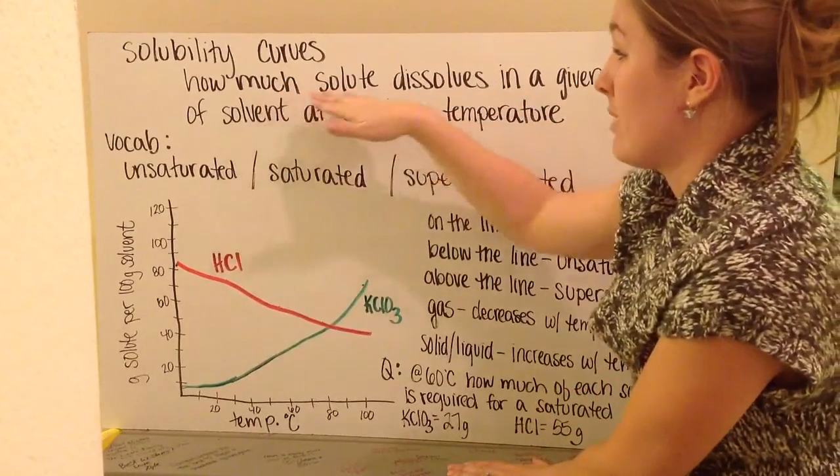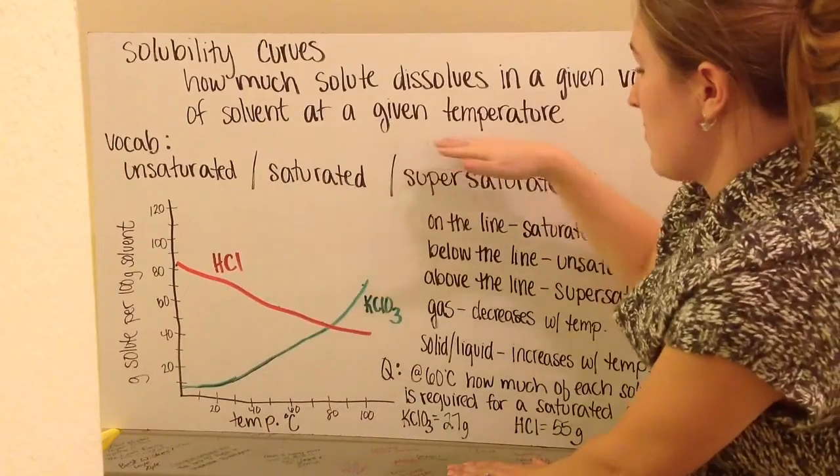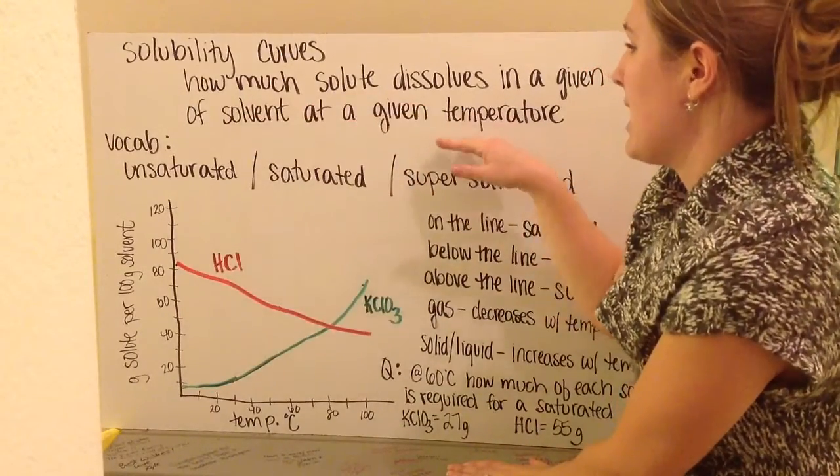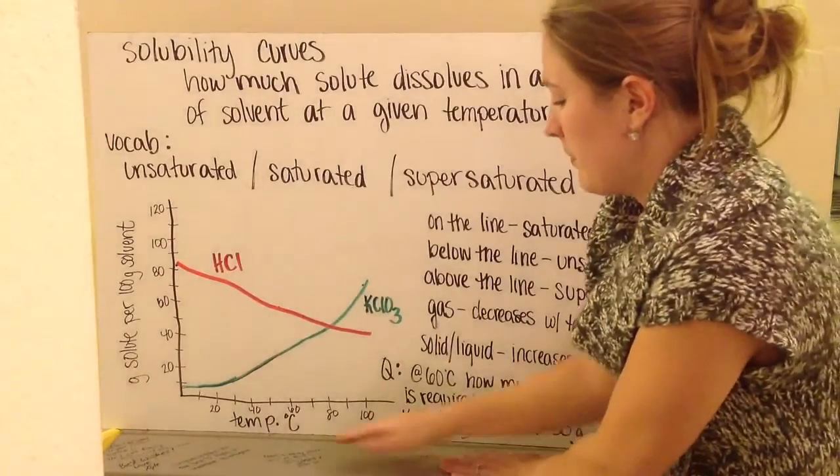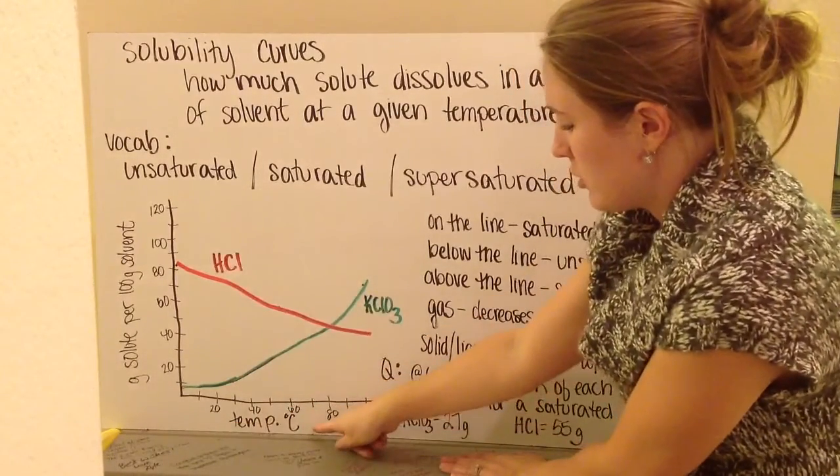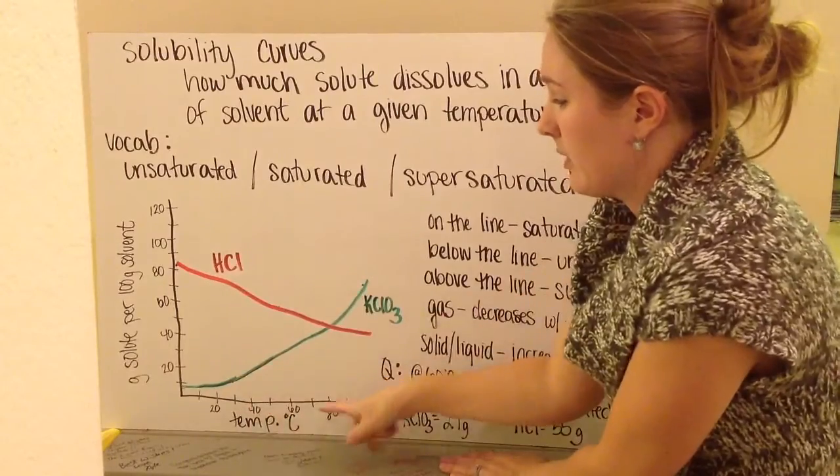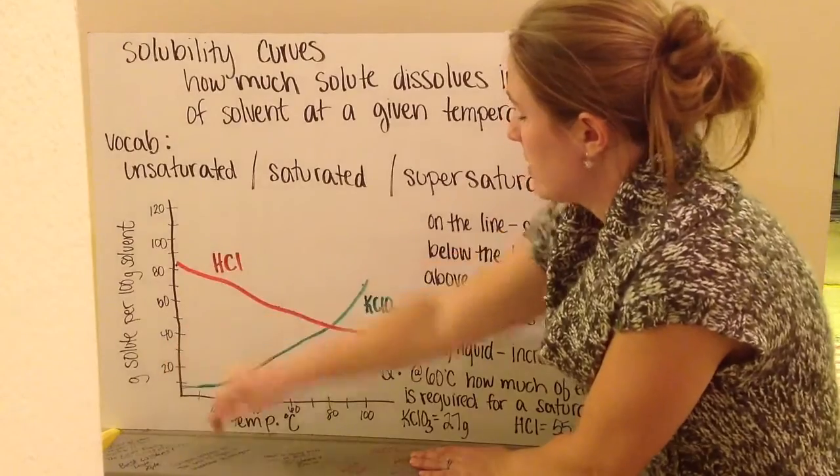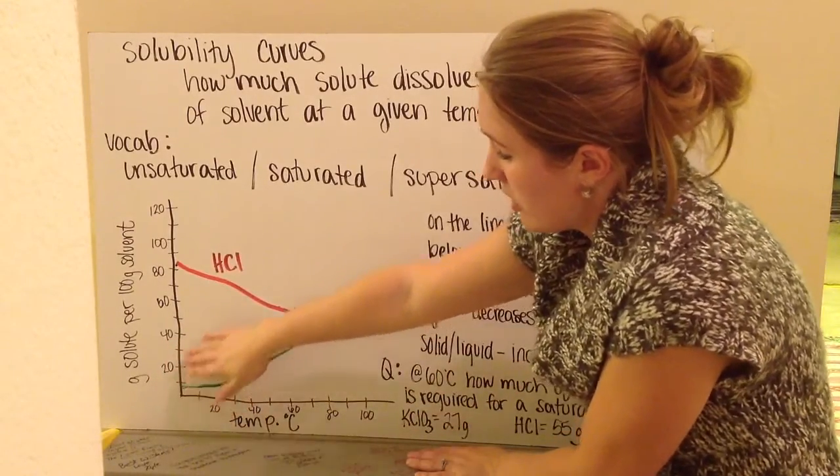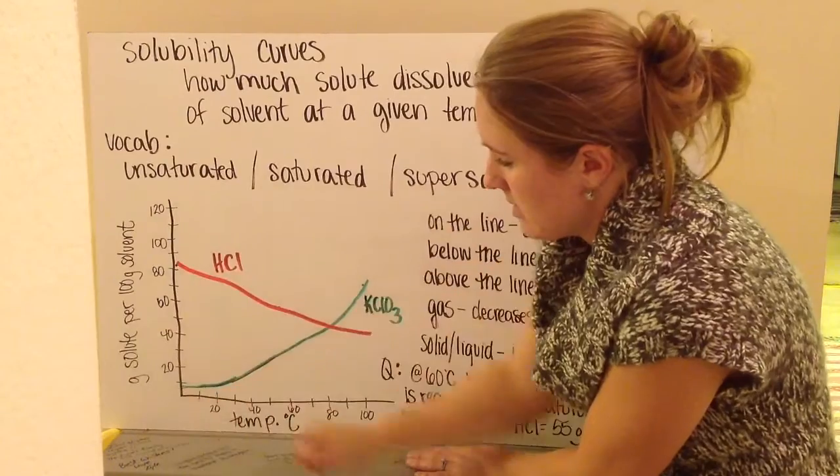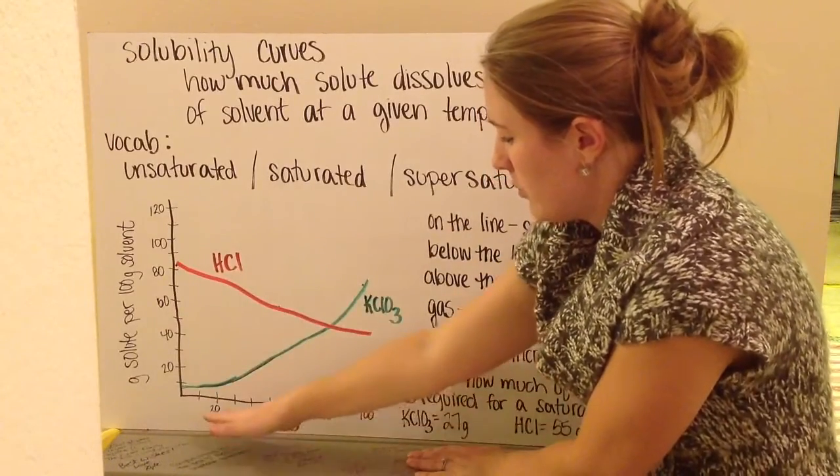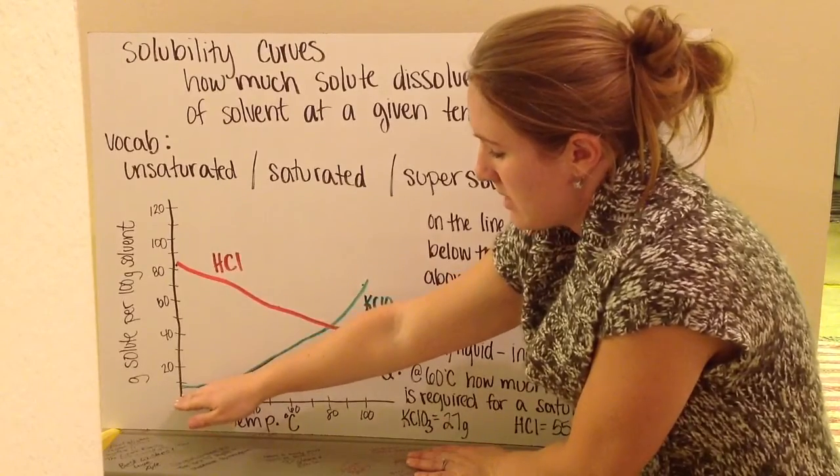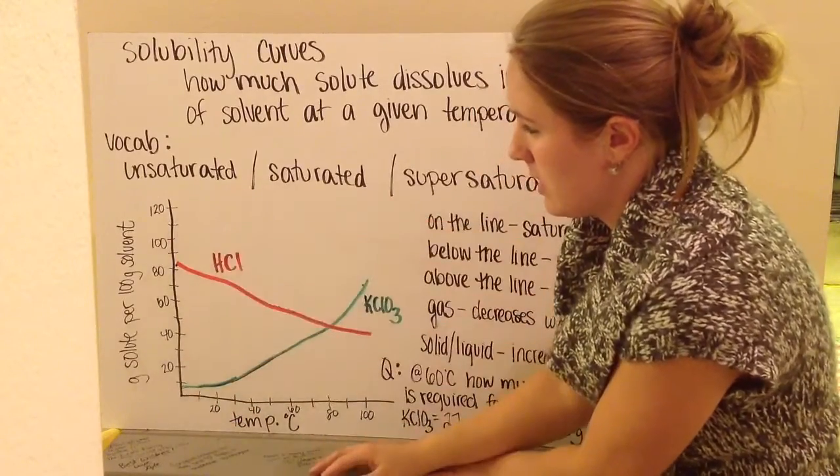We have how much solute dissolves. So, how much is how many grams at a given temperature. So, that means temperature is going to be our independent variable. How much is going to depend on the temperature. So, that's our dependent variable. Therefore, independent temperature in degrees Celsius goes on the bottom. Grams of solute per 100 grams of solvent. That's how much solute will dissolve. That's my dependent variable. So, it's going to go on my y-axis. Okay. Here, I numbered from 0 to 100 by 20. And again, for my y-axis, I numbered from 0 to 120 via 20.